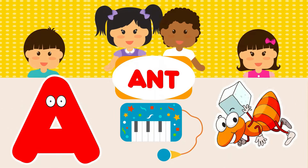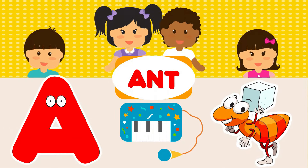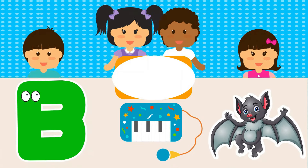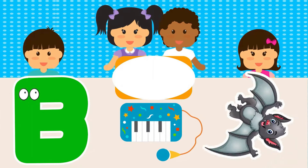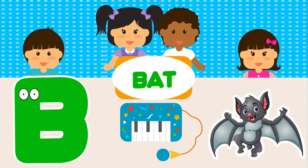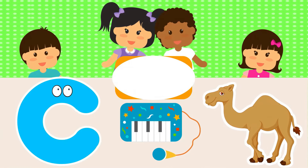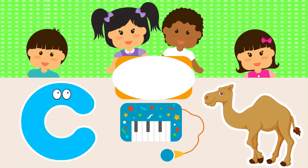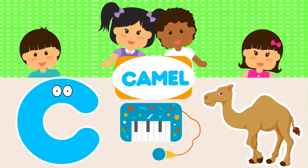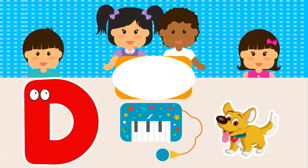A is for Ant. B is for Bat. B-Bat. C is for Camel. C-Camel.